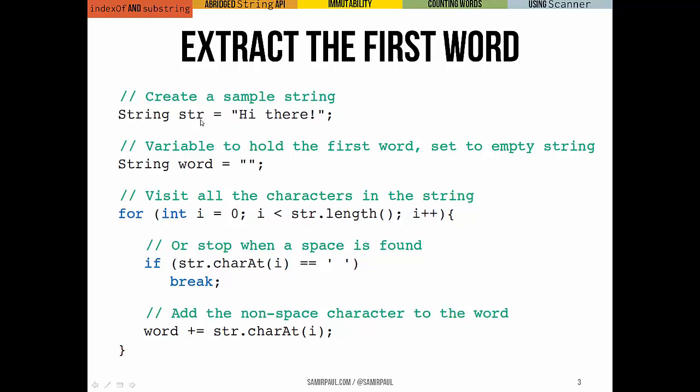You can see this is our sample string, hi there. This is the variable that we're going to use to hold the first word, initialized to the empty string. We're going to loop through every character in the string from i until the length. Or if we get to a space, we're going to stop. Notice we're using charAt. charAt returns a character, a char, not a string, and so we're able to use the equals equals operator with the space character. And if it's not a space, then we just tack on that character to word, which is our accumulator.